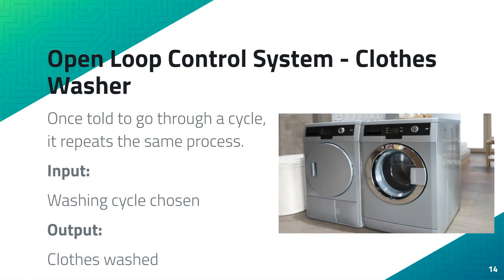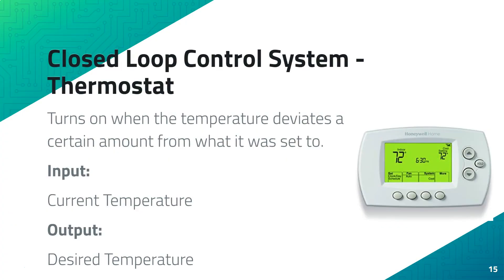In an open loop control system, an example is a clothes washer. It's told to go through a cycle, so the input is the chosen washing cycle and the output is your clothes being washed. For a closed loop control system, an example is a thermostat — the input would be the house's current temperature and the output would be the desired temperature that you set it at.